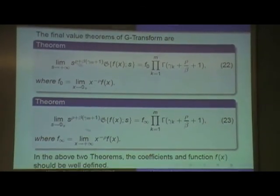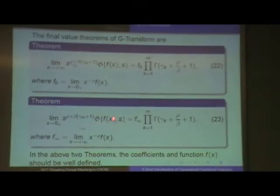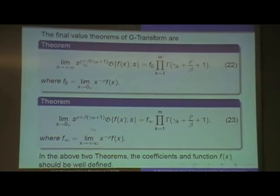That is to say sometimes we don't need to know exactly what is FX, but what we know is the distributions of the poles of FX. Then we can use these two theorems to find the initial values and the final values of FX. So these two theorems are really cool. I was shocked a lot when I first found these two theorems in Virginia's book.